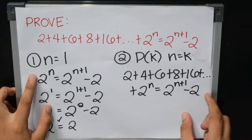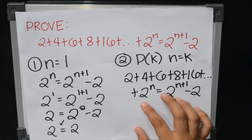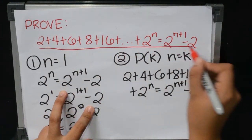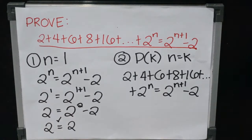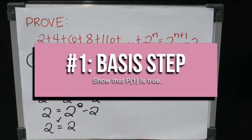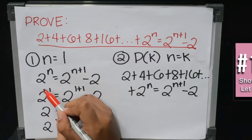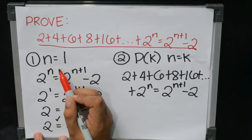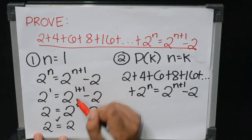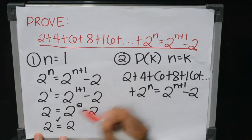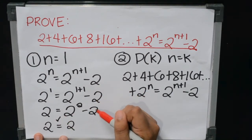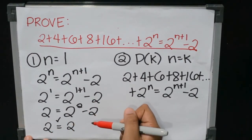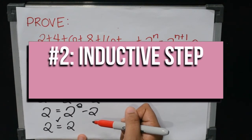For the second example, we need to prove that 2 plus 4 plus 6 plus 8 plus ... plus 2^n equals 2^(n+1) minus 2. Again, for the basis step, we let n equal 1. So 2^n equals 2^(n+1) minus 2; substituting n with 1 gives 2^1 equals 2^(1+1) minus 2, so 2 equals 2^2 minus 2, which is 4 minus 2, and we get 2 equals 2. Since the premise satisfied the first step, we proceed to the inductive step.